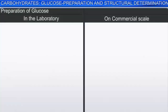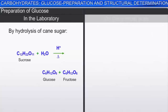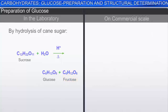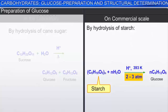In the laboratory, glucose can be prepared by the hydrolysis of cane sugar. An alcoholic solution of cane sugar or sucrose, on boiling with dilute hydrochloric acid or sulfuric acid, produces equal amounts of glucose and fructose. On a commercial scale, glucose can be prepared by the hydrolysis of starch. Starch on boiling with dilute sulfuric acid at 393 Kelvin under a pressure of 2–3 atmospheres produces glucose.